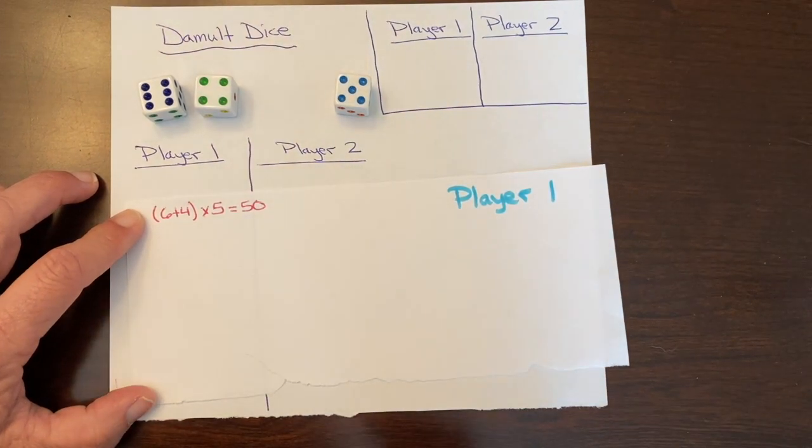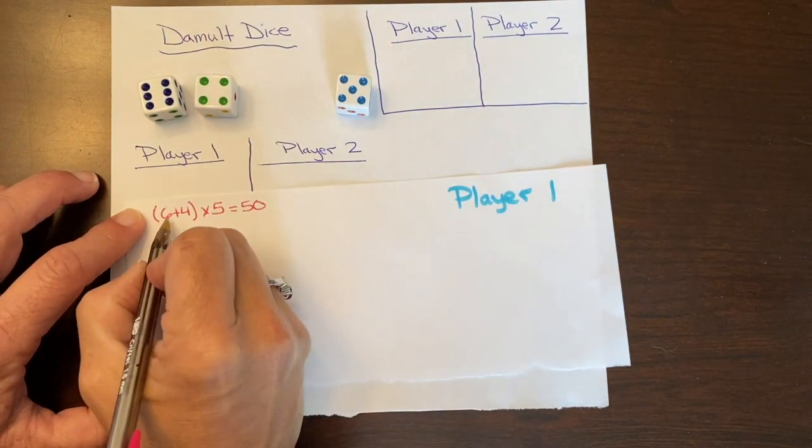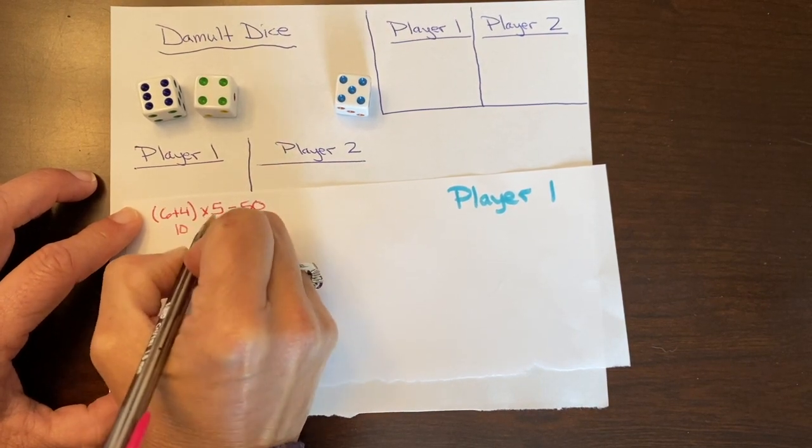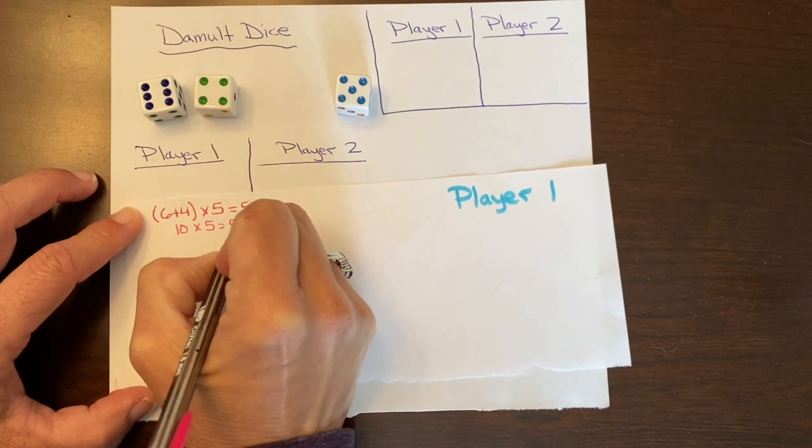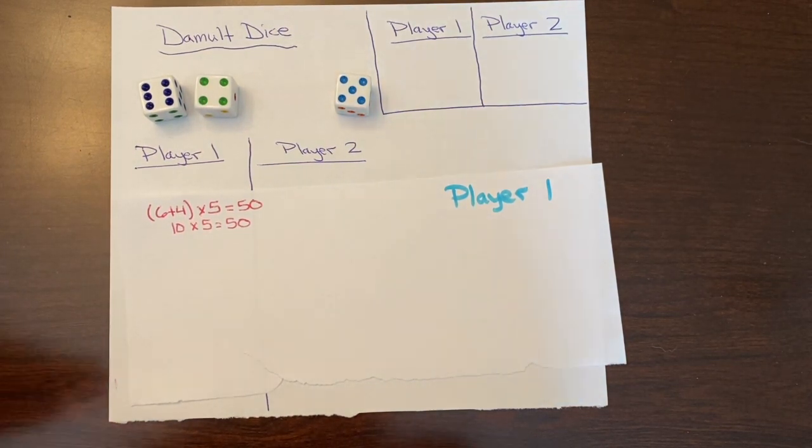Now I did that all in my head. It is okay, parents, to allow your children to write these out. So 6 plus 4 is 10, and then 10 times 5 is 50. And that just gives a little more visual support and also helps children begin showing their work as well.